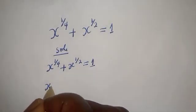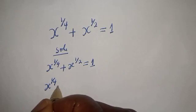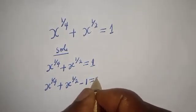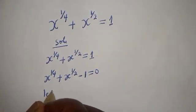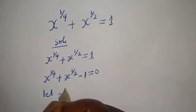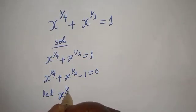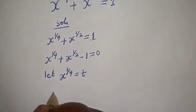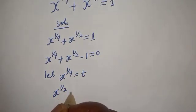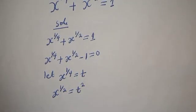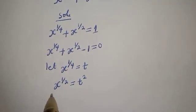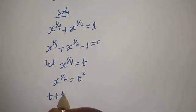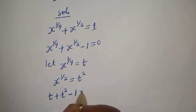Then, x raised to the power 1 over 4 plus x raised to the power 1 over 2 minus 1 is equal to 0. So, let x raised to the power 1 over 4 equal t, and x raised to the power 1 over 2 equal t squared. Then, we have t plus t squared minus 1 is equal to 0.